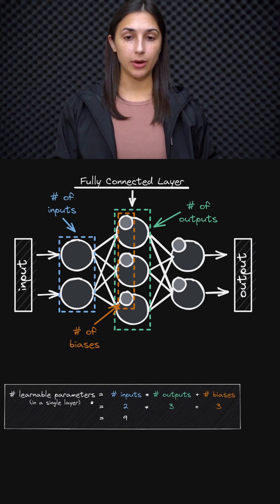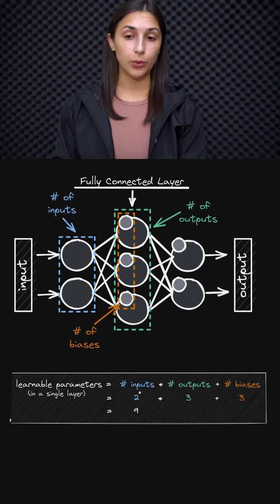Here we have the total number of learnable parameters that we're going to calculate for our single hidden layer. First, we get the number of inputs coming into this layer, which we know is two.